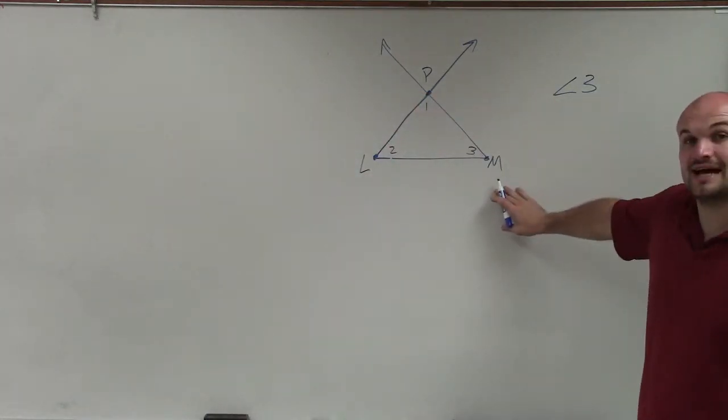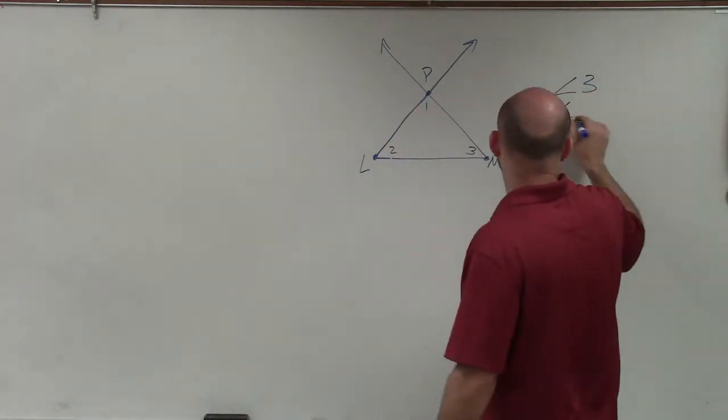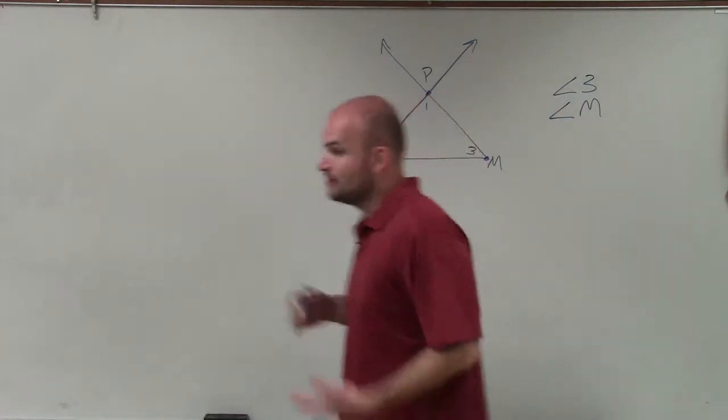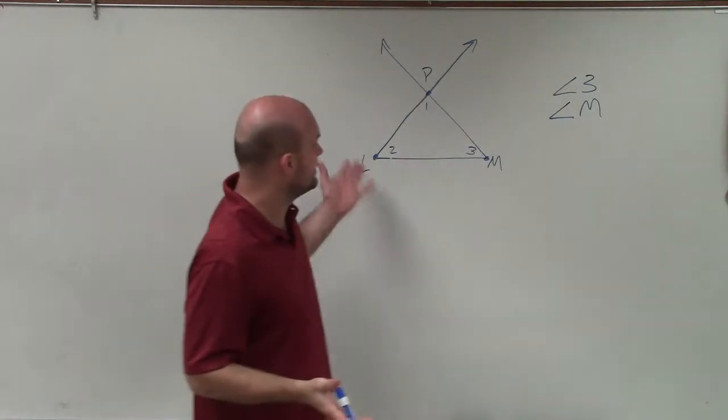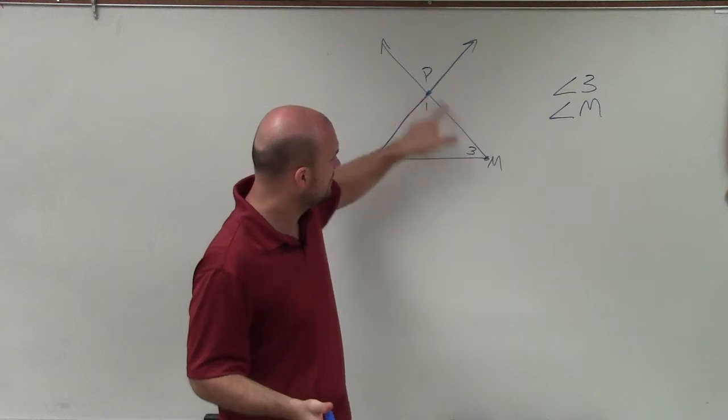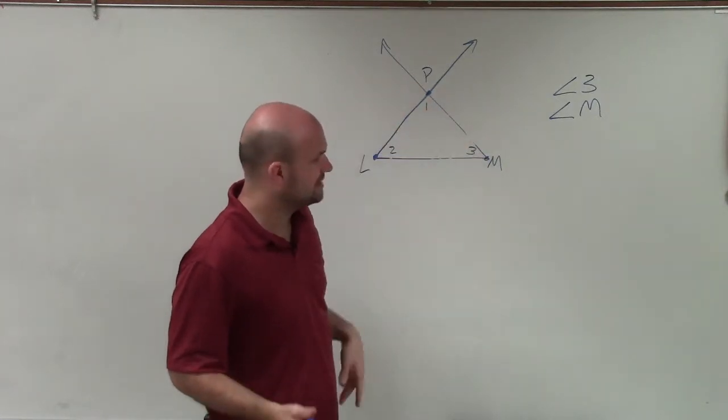Sometimes we'll also just refer to it as the name of the vertex. So I can also call this angle M. So if I say angle M, then you could look at it and say, oh, that angle. It's going to be the rotation between these rays.